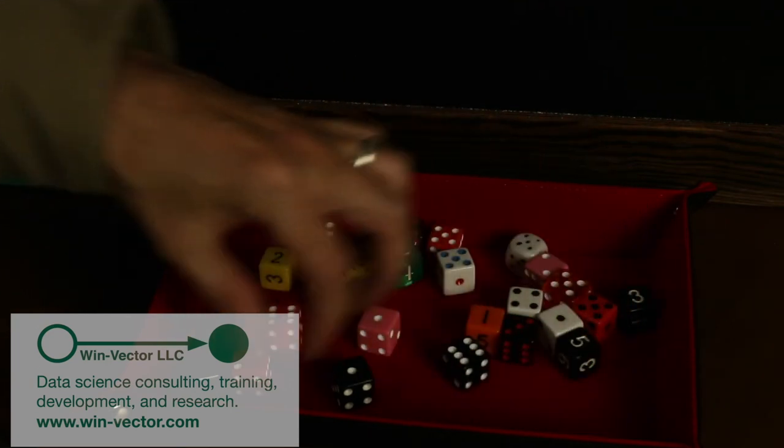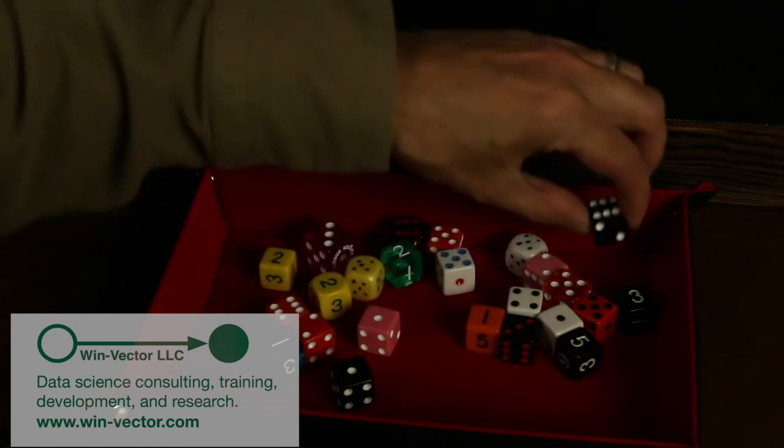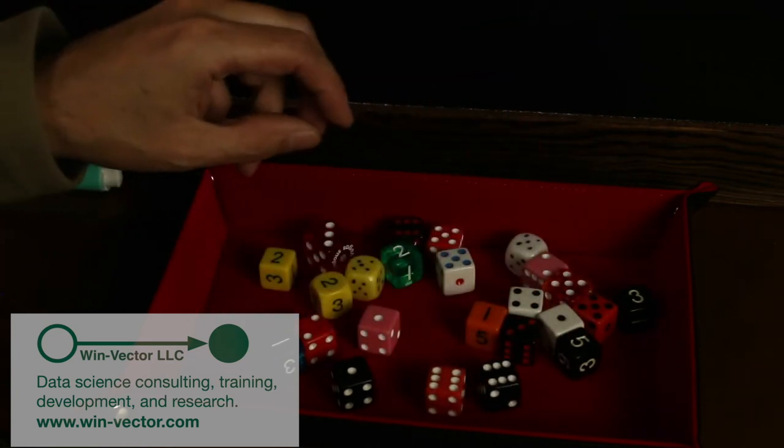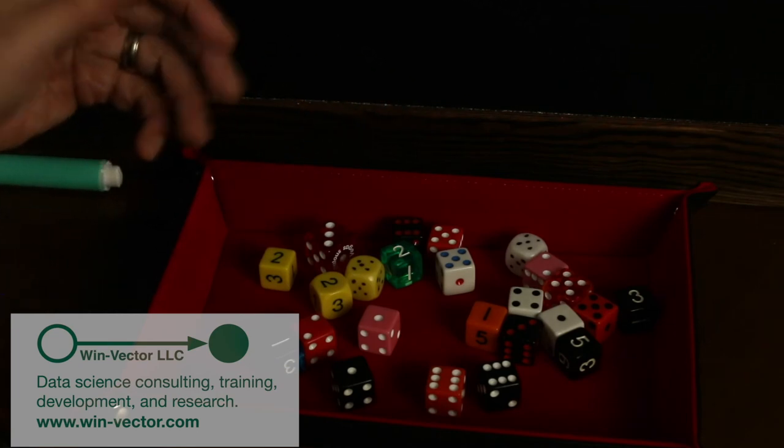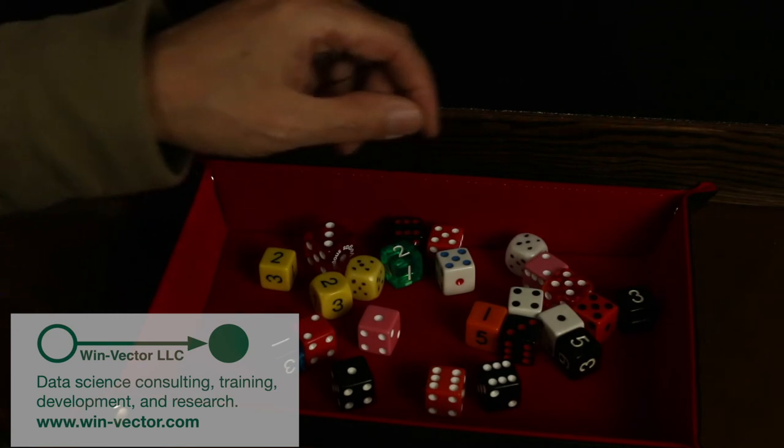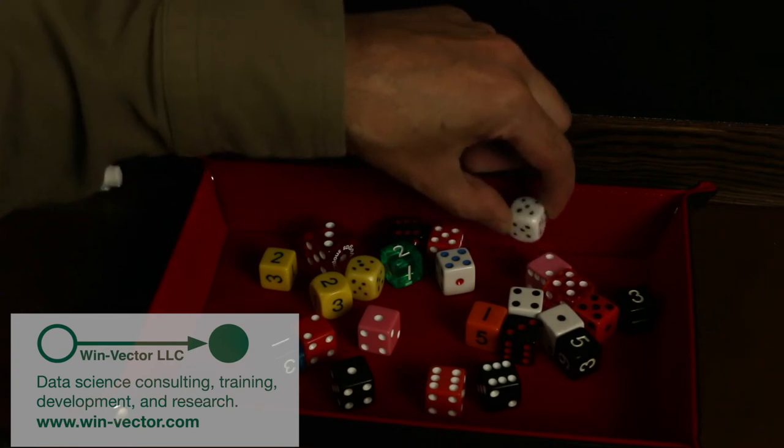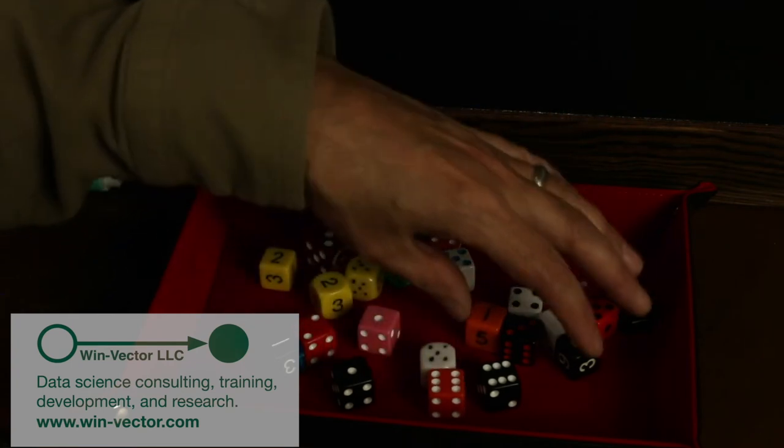So why we care about our estimates being wrong is if we can only take three and we use the experimental value seen, well, the top three is this six, this six, and one of the fives. And let's just assume we get lucky and we actually take one of the special fives.